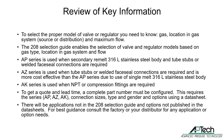Let's review key information in regulator and valve series and model selection. To select the proper model of valve or regulator, you need to know the gas, location in the gas system, and flow. The 208 selection guide enables selection of the valve or regulator model based on gas type, location in gas system, and maximum flow. The AP series is used when secondary remelt 316L stainless steel body and tube stubs or face seal connections are needed. The AZ series is used when tube stub or face seal connections are needed and is more cost-effective than the AP series due to use of single-melt 316L stainless steel. The AK series is used when NPT or compression connections are required. To get a proper price quote and lead time, a complete part number must be configured, with choice of series AP, AZ, or AK, connections, and other options using our datasheets.